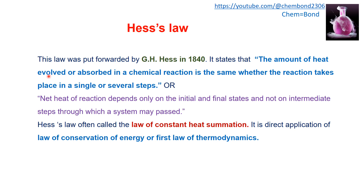We are changing a system A to B. The amount of heat evolved in a single step is the same as converting A to B through various intermediate steps. The net heat of reaction depends only on the initial and final states, and not on the intermediate steps through which a system may pass. Hess's Law is often called the Law of Constant Heat Summation, and it is a direct application of the law of conservation of energy, or the first law of thermodynamics.